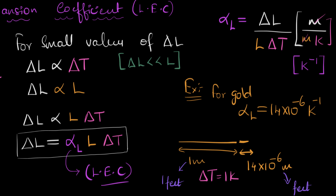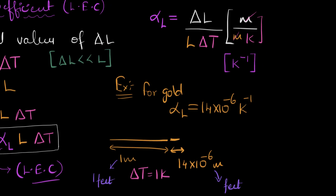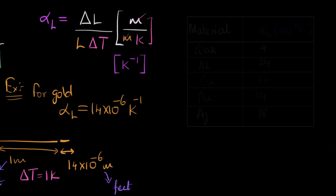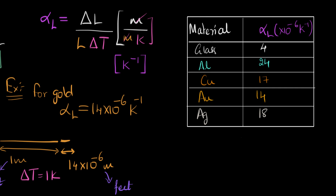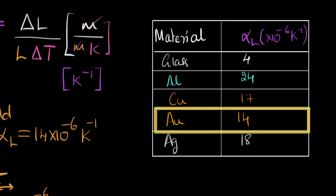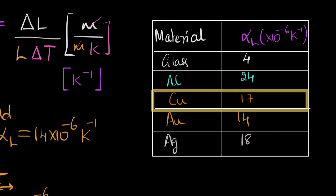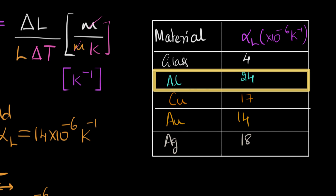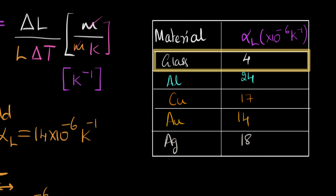Let's look at alpha L values for some typical materials, all in units of 10 to the minus 6 Kelvin inverse. Gold is 14, copper is 17 — meaning copper expands more on heating than gold. Aluminium expands even more. Glass has a value of just 4 times 10 to the minus 6 Kelvin inverse, which means glass doesn't expand as much as these metals.